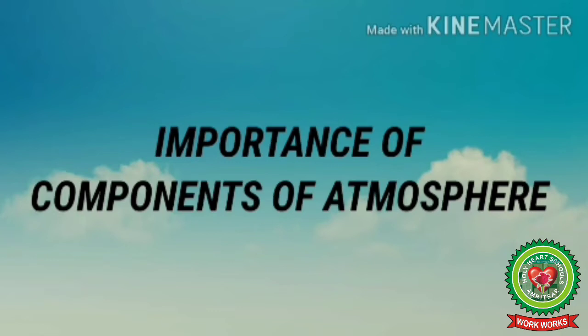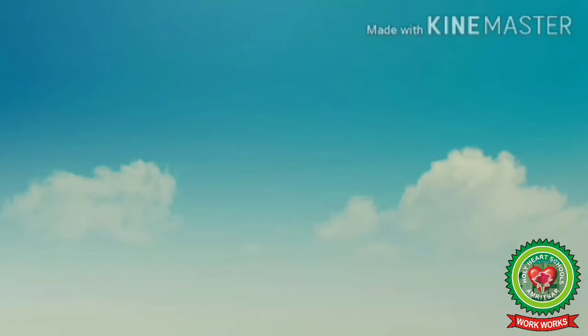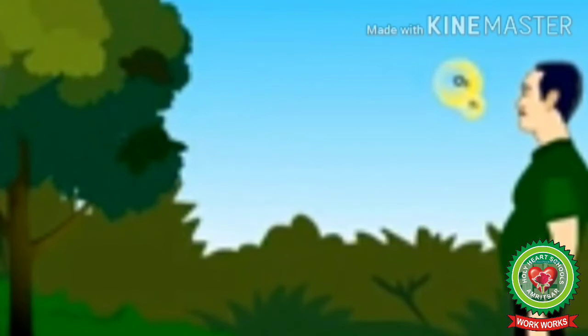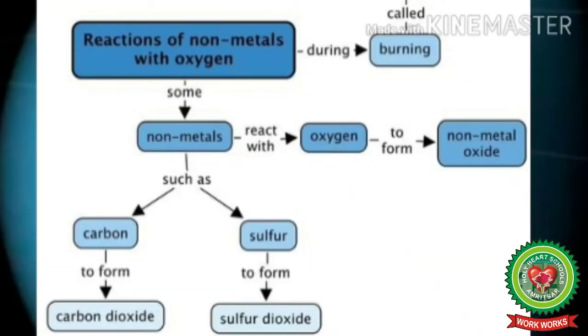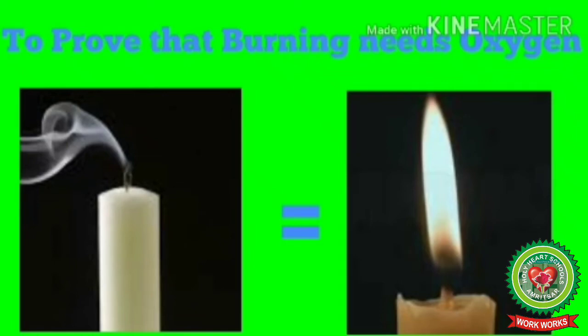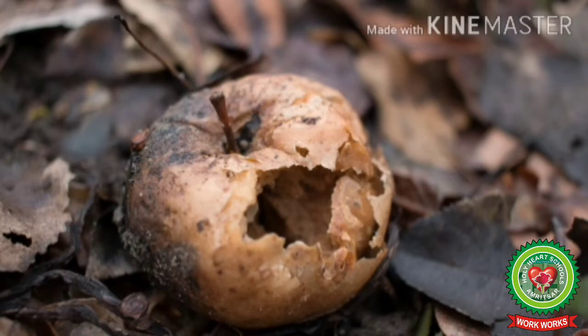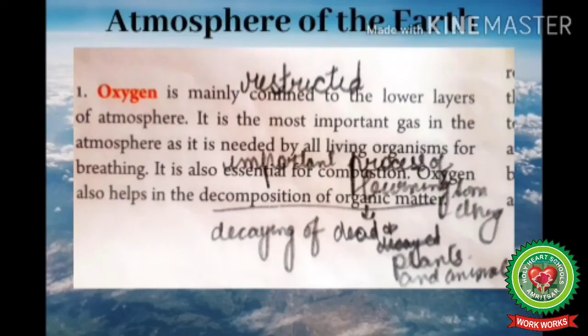Next we are starting with the importance of various components of the atmosphere. Oxygen has the second highest concentration in the atmosphere. It is also called the life-supporting gas as all organisms, including humans, require oxygen to breathe. It also combines with various elements of the environment causing chemical change through the process of oxidation. Oxygen is mainly confined — meaning restricted — to the lower layers of the atmosphere, the troposphere. It is needed by all living organisms for breathing.